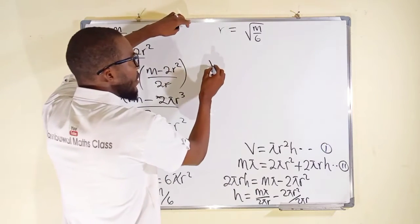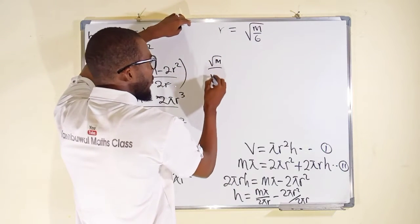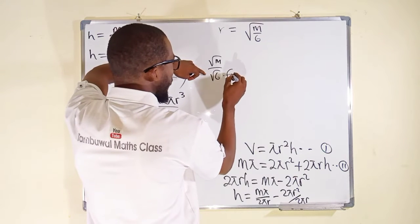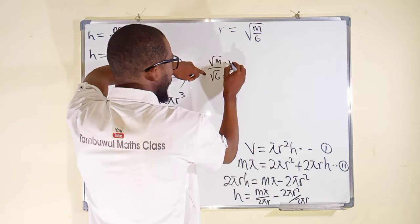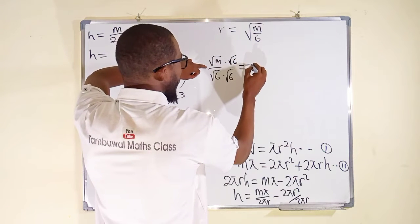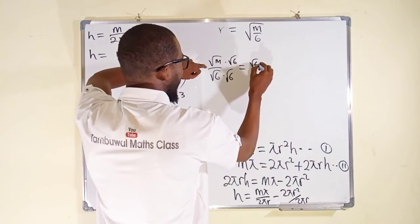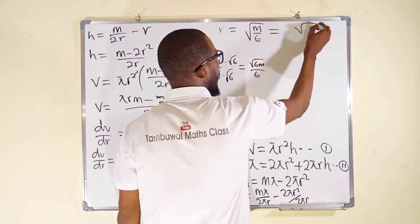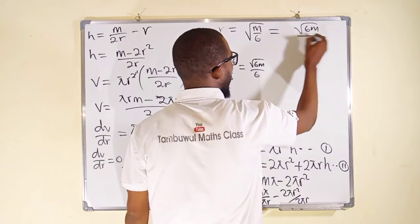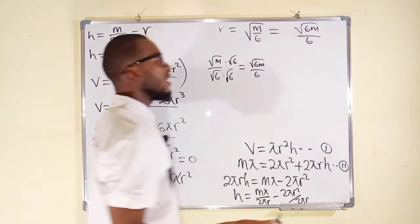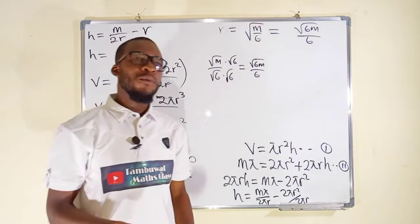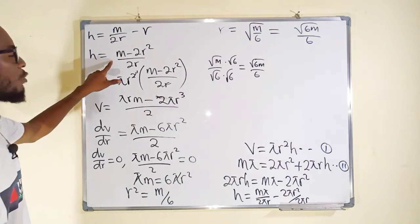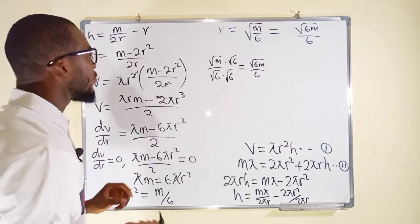This can be written as square root of M divided by square root of 6. Multiplying numerator and denominator by root 6 to rationalize the denominator gives r equals root(6M) divided by 6. So the value of r is root(6M) over 6. We can now substitute this back to obtain the corresponding value of h.